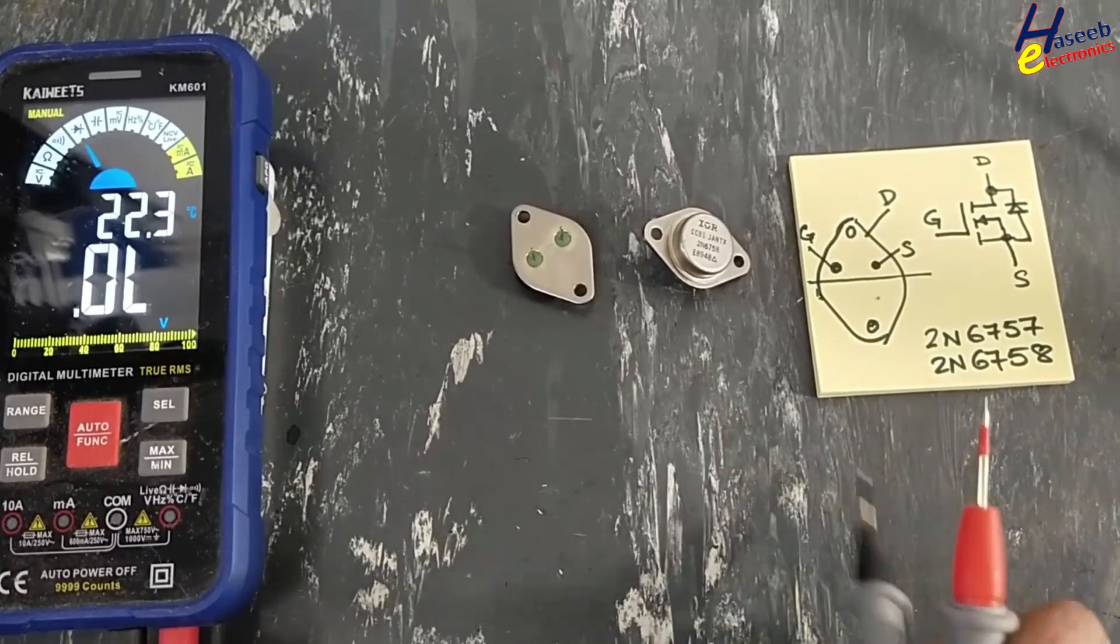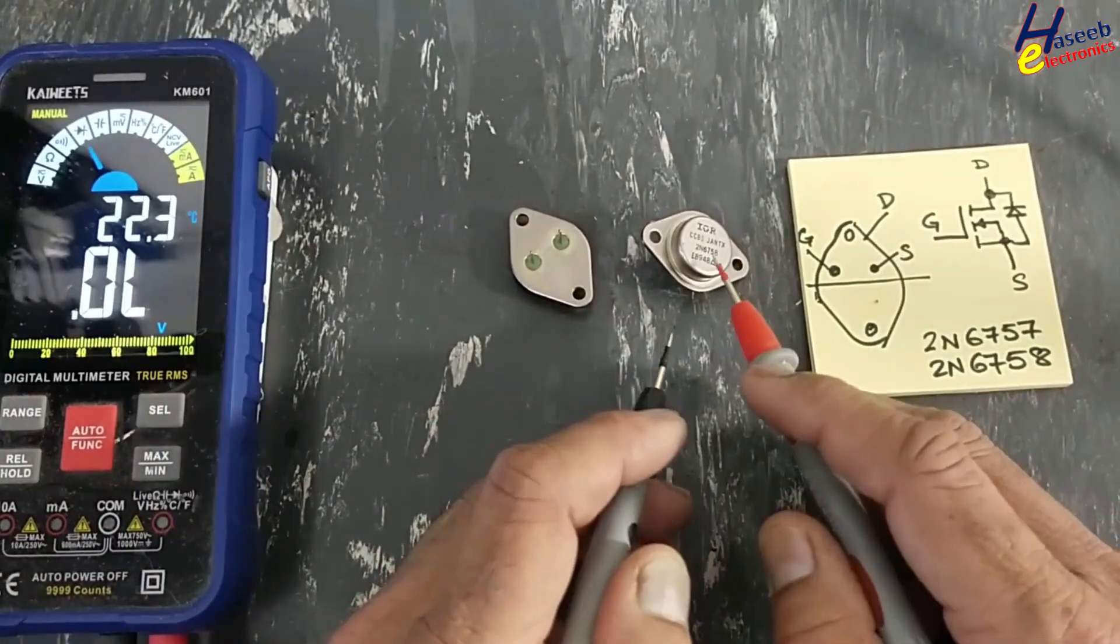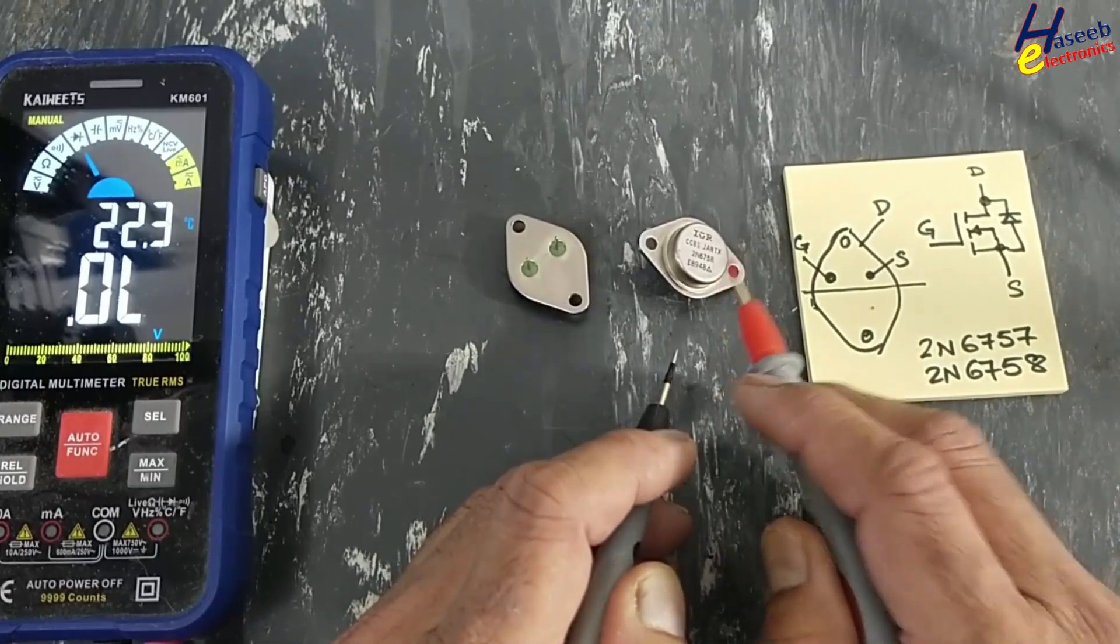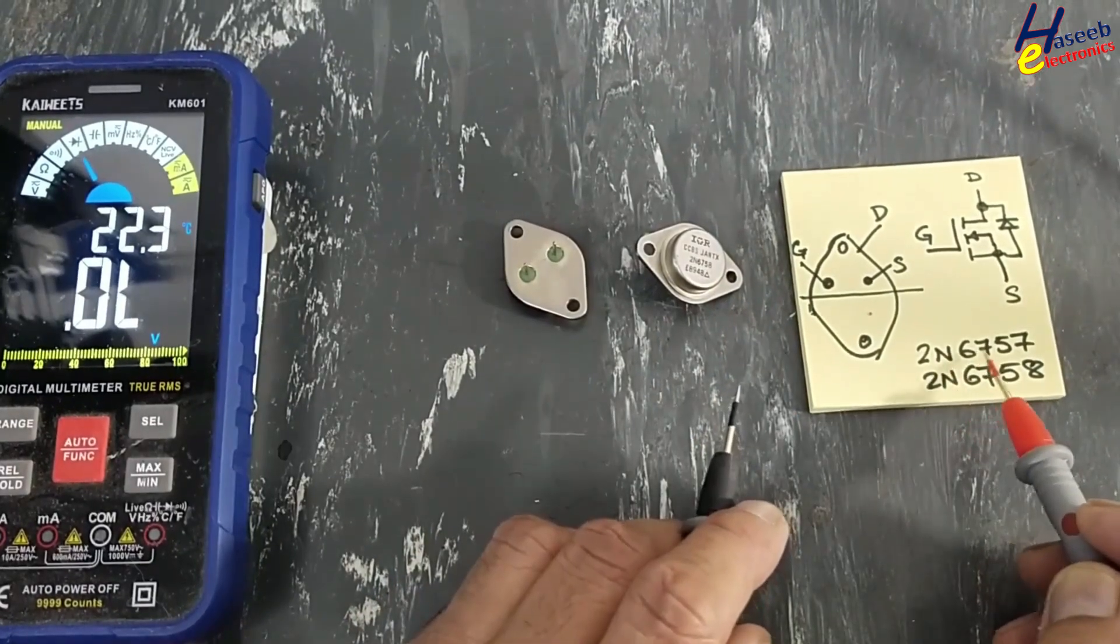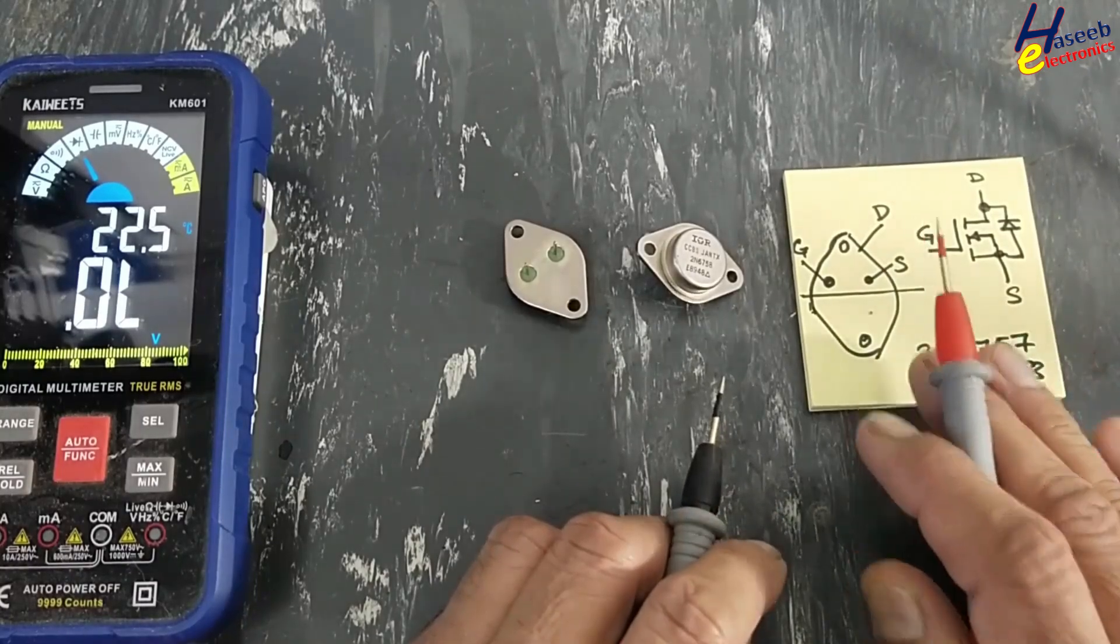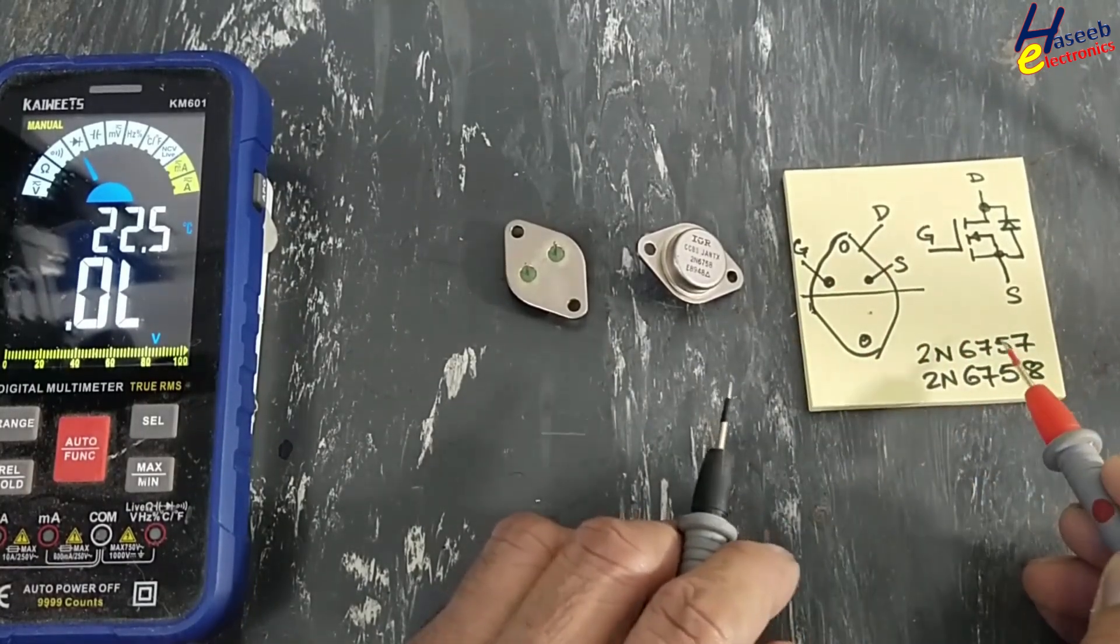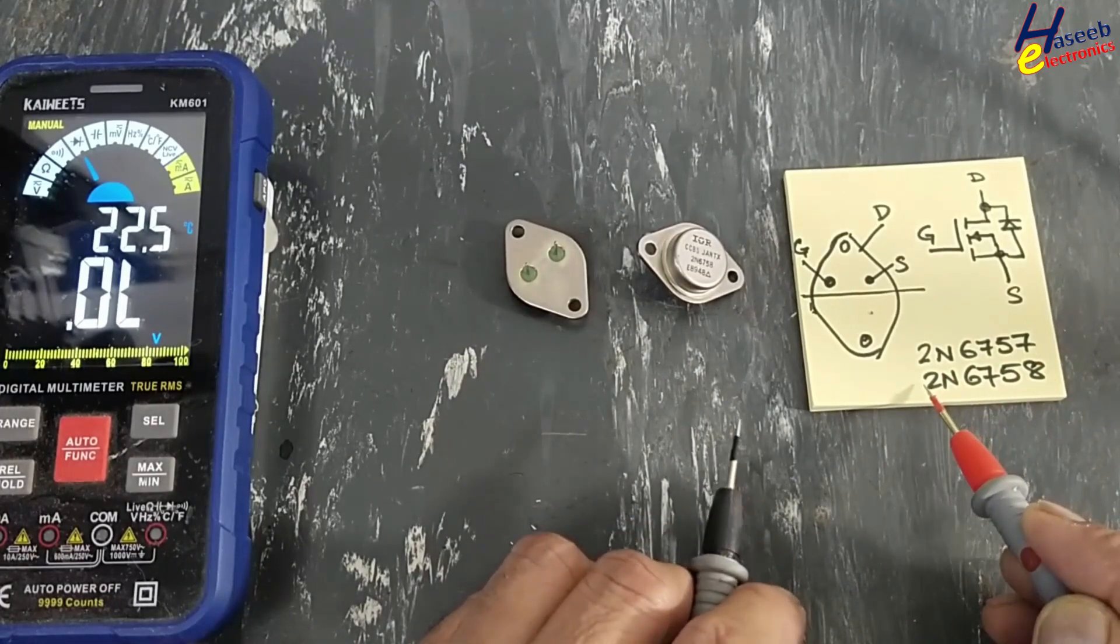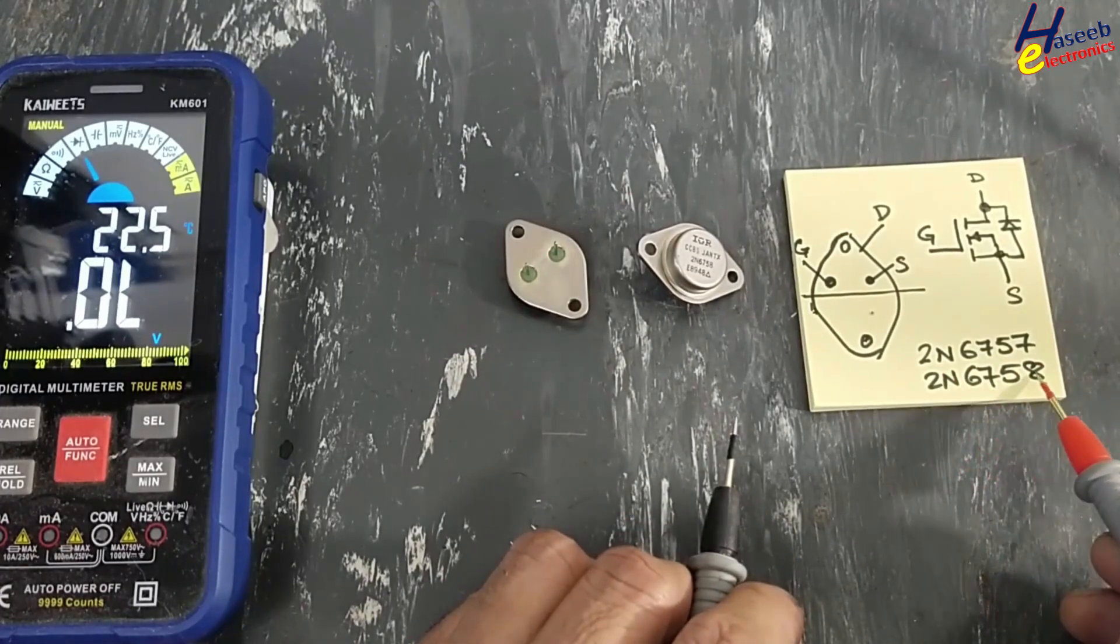Assalamu alaikum wa rahmatullahi wa barakatuhu, friends, welcome back to my channel. Today we're testing IR 2N6758 and 2N6757, N-channel power MOSFETs rated at 9 ampere 150 volt and 9 ampere 200 volt respectively.